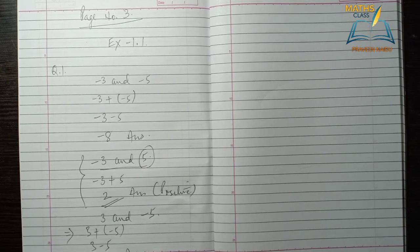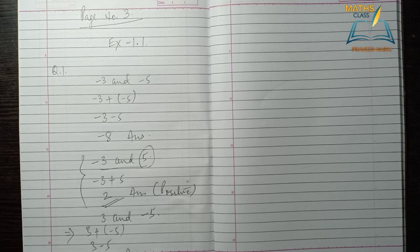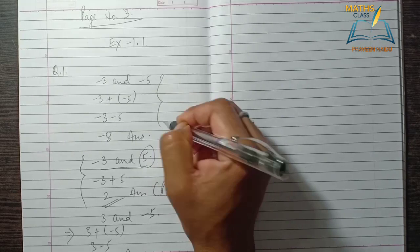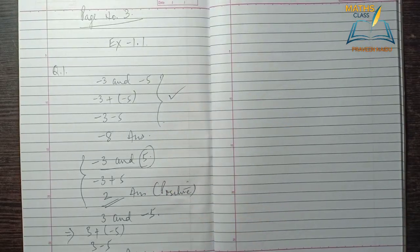According to this rule, there are some more questions given. The second one is: you have to take 2 integers whose sum is minus 8. For example, minus 3 and minus 5, or 8 and minus 20. Keeping these two properties in mind, you can solve question number 1.